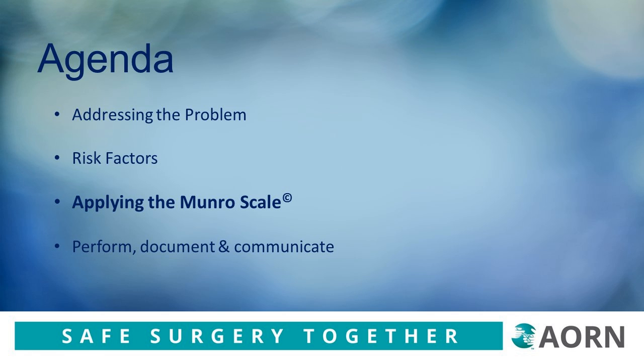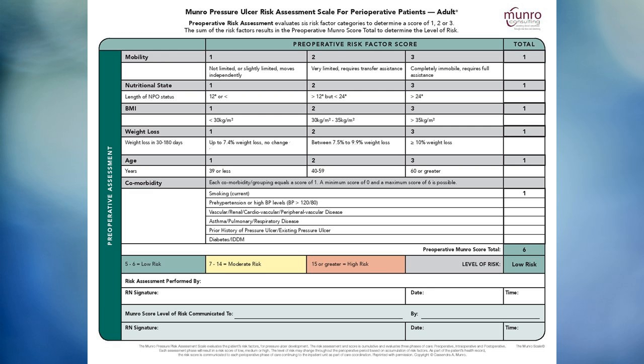Risk assessment is an intervention for prevention. The pressure injury risk factors spanning the preoperative, intraoperative, and postoperative phases of care within the Munro Scale are three separate subscales for performing an individualized risk assessment, and this should be documented in the electronic health record. The Munro Scale is a standardized and collective risk assessment — collective because it's an accumulation of all three subscales. There is no equal to this comprehensive instrument.